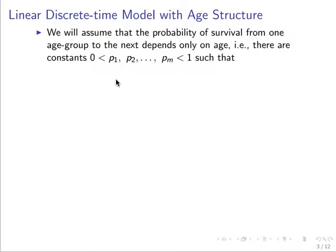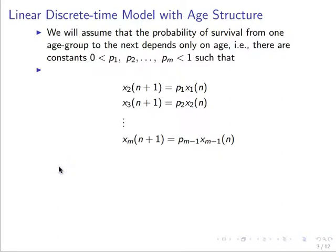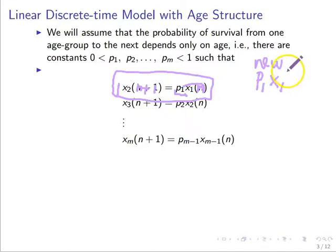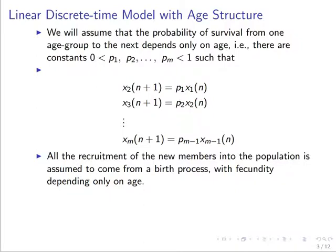With the exception of the first group, we write expressions for x sub 2, x sub 3, x sub 4, all the way through x sub m. For example, the number of individuals in group 2 at time n+1 is going to be the fraction p sub 1 of those individuals that were in group 1 at the previous time step n. So the product p sub 1 times x sub 1 gives the new x sub 2 — those that go into the following group are just the surviving fraction of the previous group.